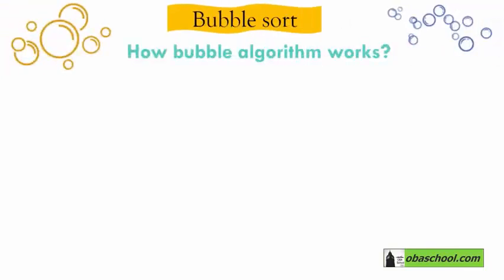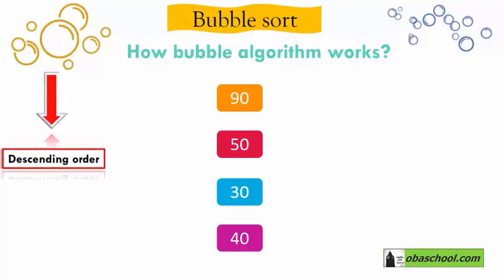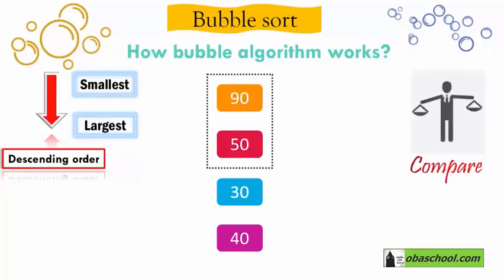Bubble sort — how does the bubble sort algorithm work? Let's start by looking at these four numbers: 90, 50, 30, 40. We need to sort them in descending order, which means the smallest number should be at the top and the largest at the bottom. Now, how does bubble sort work? We compare the first two numbers and check which is the smallest and which is the largest.